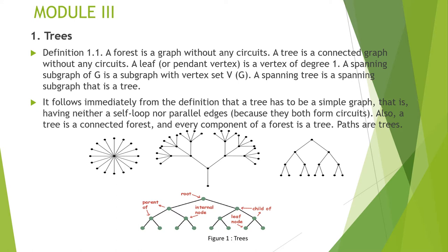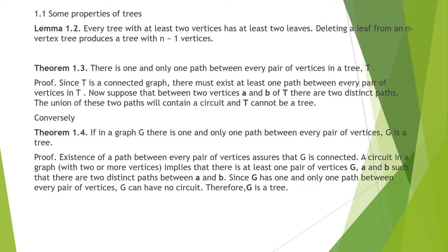In a tree you can see that there is a root, and also internal nodes, leaf nodes, etc. Next are some properties of trees. The first property is: every tree with at least 2 vertices has at least 2 pendant vertices.